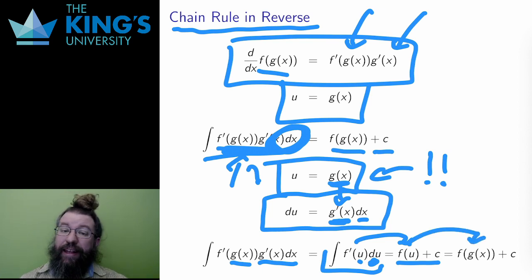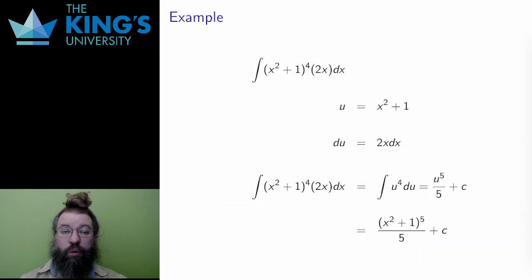Then, at the end of the process, I reverse the substitution, replacing u with g(x) again. This is the general idea, but it's pretty difficult to understand without practice. Let me show you how it works in examples.